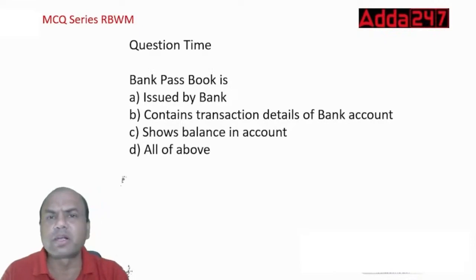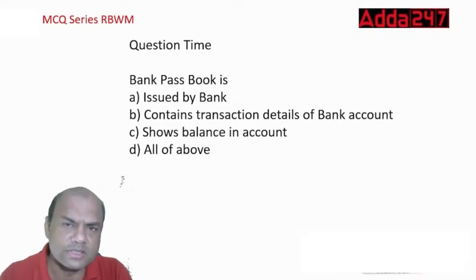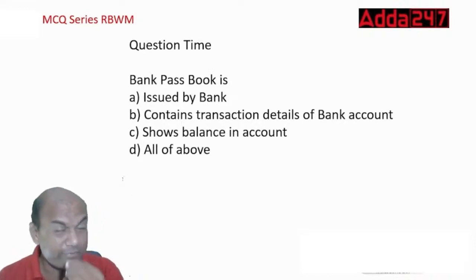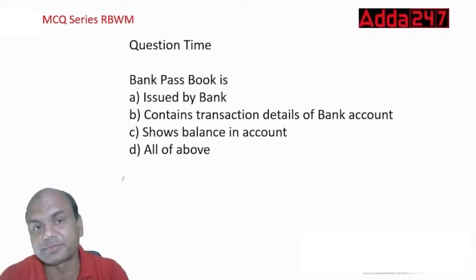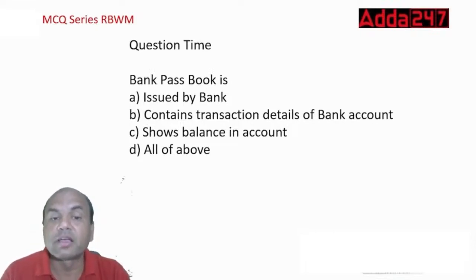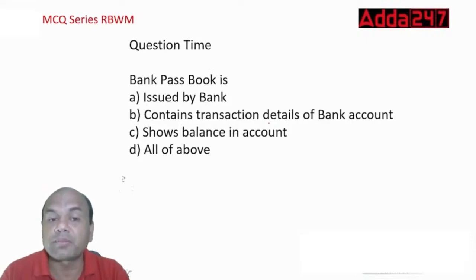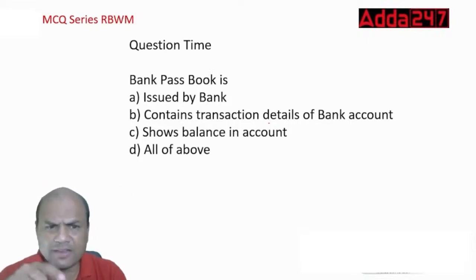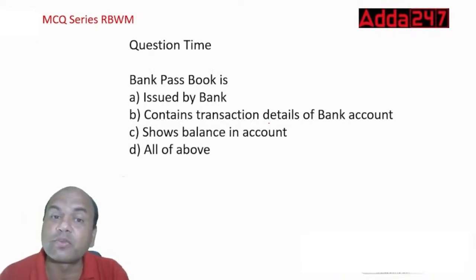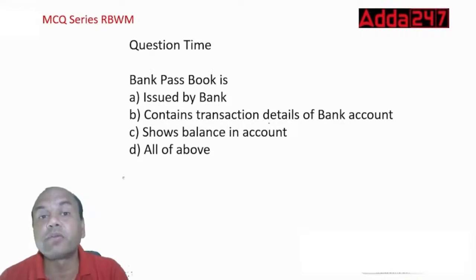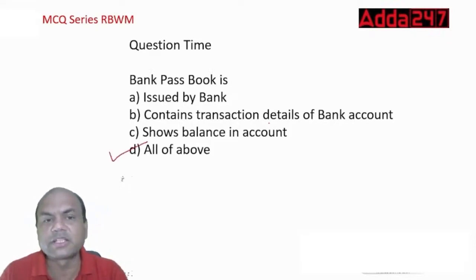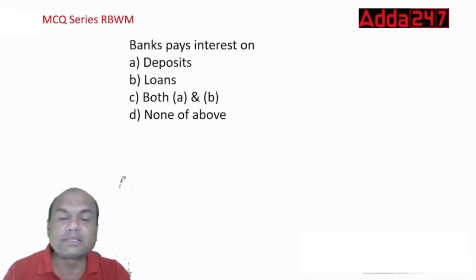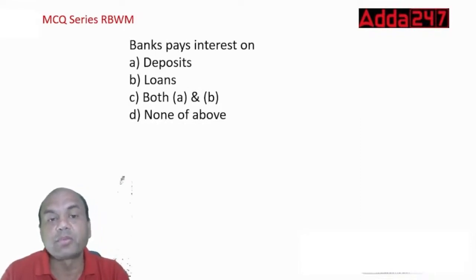Bank passbook is issued by the bank, contains transaction details of the bank account, and shows the balance — so the answer is D, all of the above. Bank pays interest on deposits. Bank charges interest on loans — not on deposits.